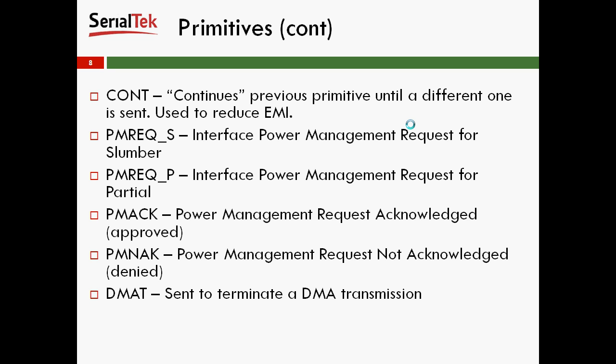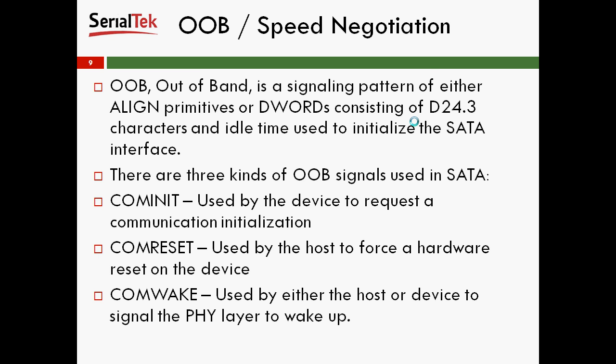Lastly, and not so popularly used, is DMAT, which is generally sent to terminate the DMA transition. Next, we're going to look at OOB and speed negotiation. OOB, otherwise known as out of band, is a signaling pattern of either aligned primitives or D-Words consisting of D24.3 characters and idle times, used to initialize the SATA interface. There are three kinds of OOB signals used in Serial ATA: COMINIT, used by the device to request a communication initialization; COMRESET, used by the host to force a hardware reset on the device; and COMWAKE, used by either the host or device to signal the physical layer to wake up.